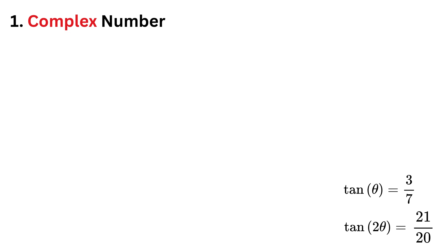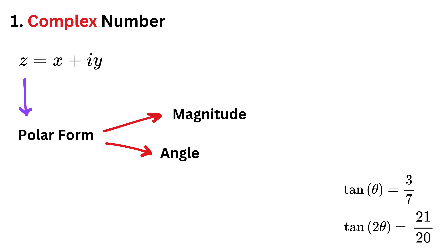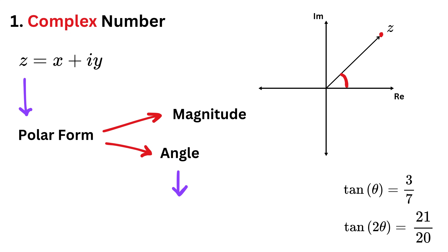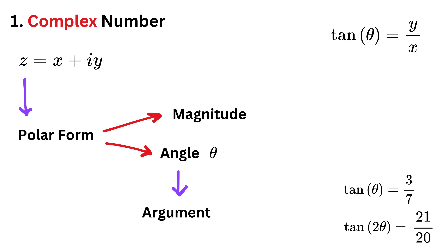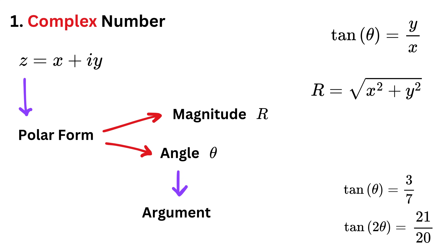Suppose we have a complex number of the form z equals x plus i·y. In polar form, we can represent this complex number using its magnitude and angle. The angle that this complex number makes with the positive real axis is called the argument of z, and it is basically the angle theta, which is found using the relation tan of theta equals y over x. The magnitude of z, which we represent using r, is given as the square root of x squared plus y squared. This makes z equal to r times e raised to i times theta.